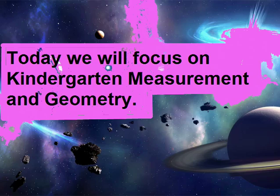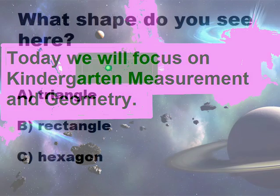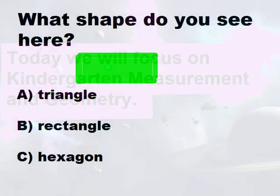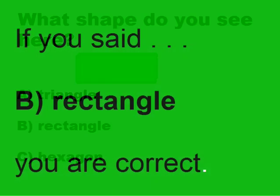Today we will focus on kindergarten measurement and geometry. What shape do you see here? A triangle, B rectangle, C hexagon. If you said B rectangle, you are correct.